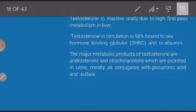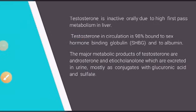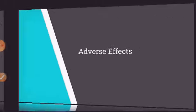Testosterone is inactive orally due to high first-pass metabolism in the liver. In circulation, 98% is bound to sex hormone binding globulin and albumin. The major metabolic products are androsterone and etiocholanolone, excreted in urine mostly as conjugates with glucuronic acid and sulfate.